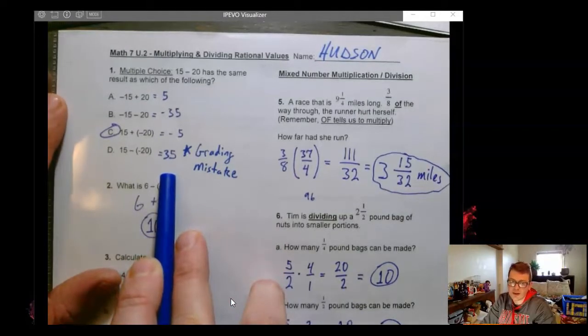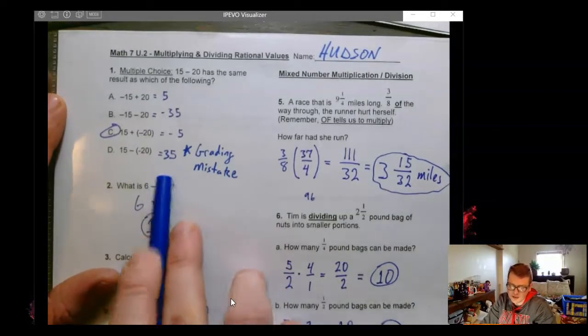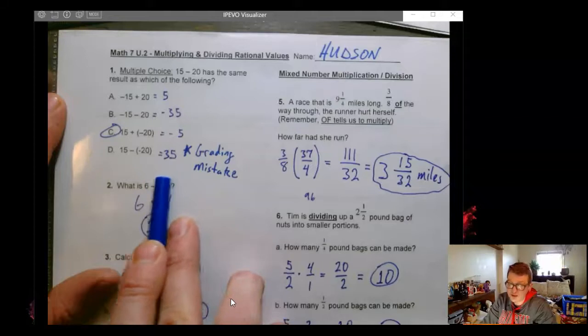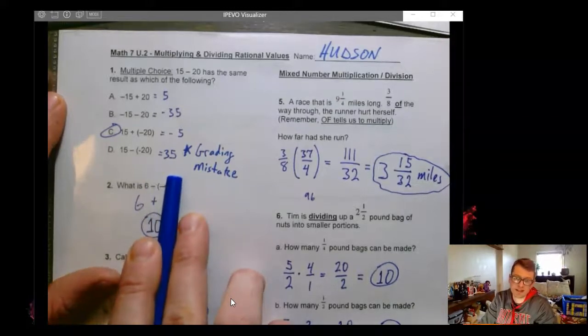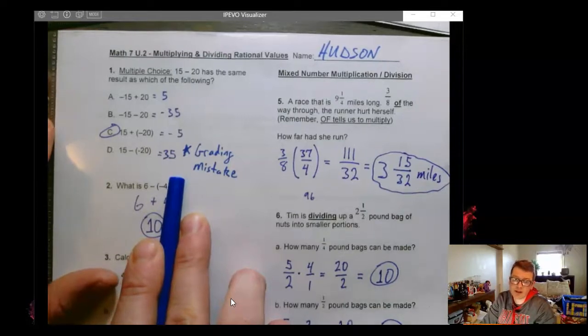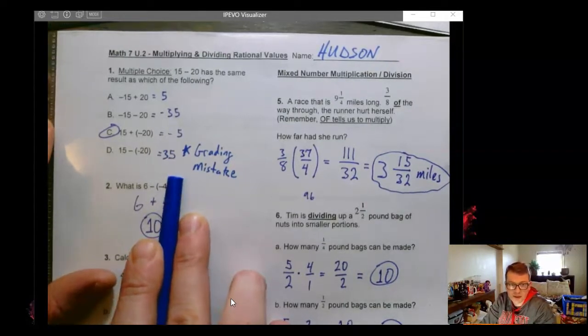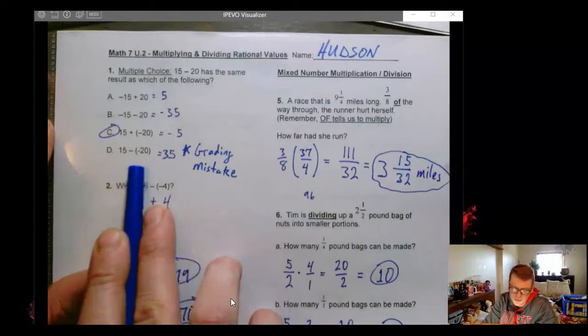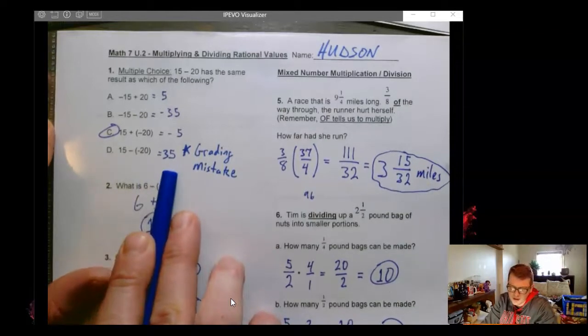I had written 5. And for a hot minute while I was grading, I marked those wrong, or sorry, I marked 35 wrong when it is, in fact, correct. Likewise, if you had 5, that's not correct. If I marked 5 correct, please realize that's not right. This becomes 15 plus 20, making 35.